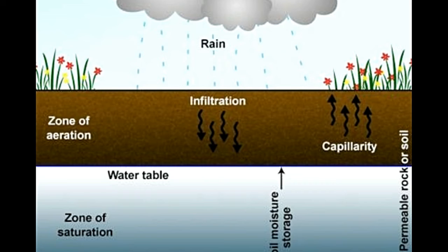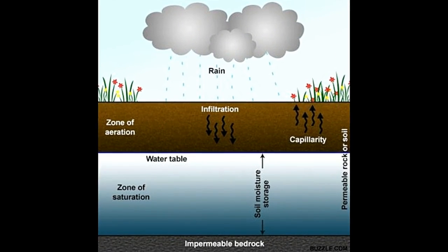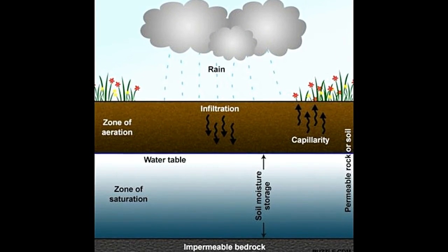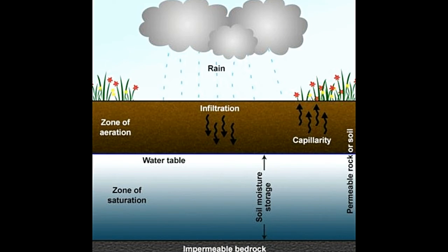The uppermost portion of the zone of saturation is known as the water table or the phreatic surface. It forms a dividing line between the zone of aeration and the zone of saturation. As the depth of the saturation layer increases, the interconnected openings filled with water become so few that they are almost non-existent. The width of the zone of saturation may be very small in areas underlying consolidated rocks having joints tapering at shallow depths, or may be thousands of meters in areas underlying thick sedimentary formations.